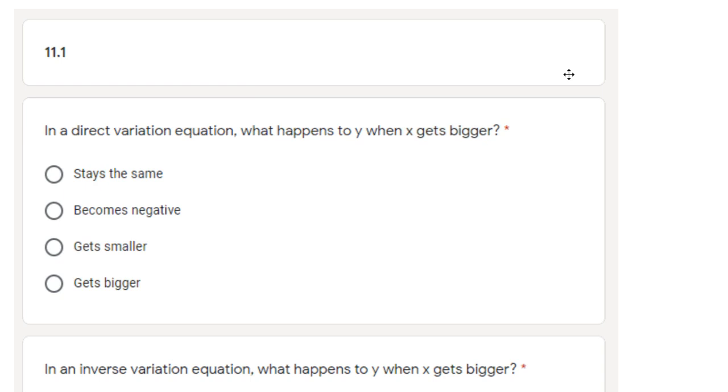First section with some vocab asked you about direct and inverse variation equations. A direct variation equation is an equation of the form y equals kx, where k is some constant, it could be any number you like, 4. As x gets bigger, you're going to multiply by 4, and y will therefore also get bigger.